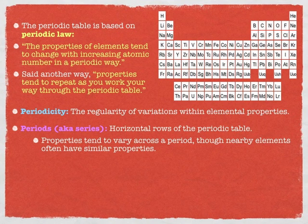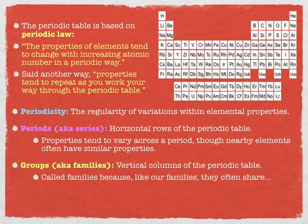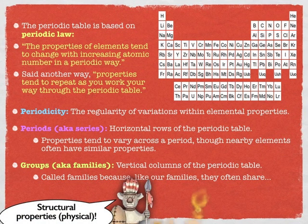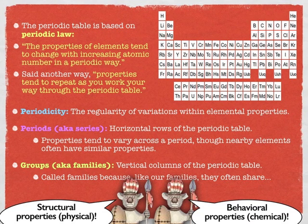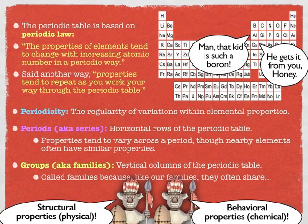Just like a lineup in elementary school, things closer to each other in a period are more likely to have similar properties — like being the same height as someone standing next to you for school pictures. The vertical columns of the periodic table are known as groups or families. 'Families' is a great name because, like families, they share not only structural properties but behavioral properties, which comes from valence electrons. You probably have similar physical features and behaviorisms to your family, even if you hate to admit it.